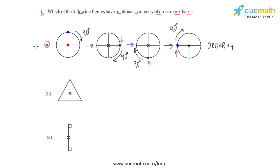According to this question, figure A has a rotational symmetry of order more than one. Let us now look at figure B, where the cross again represents the fixed point or the center of rotation.